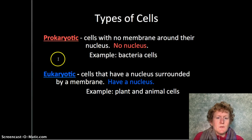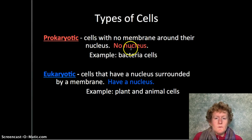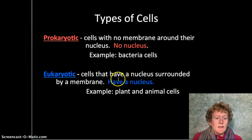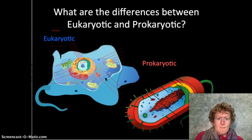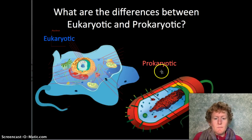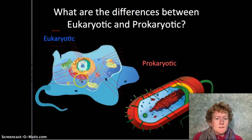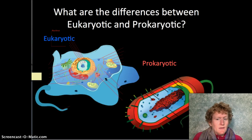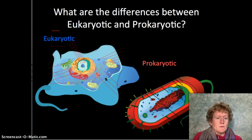So remember, there are two types of cells. Prokaryotic, with no nucleus and no organelles to keep it organized. And eukaryotic — you are a eukaryotic cell, with a nucleus and nicely organized organelles. Prokaryotic cells are still pretty powerful; bacteria can make you really sick, but they're not organized with organelles or a nucleus.